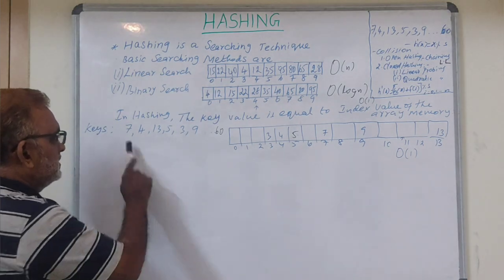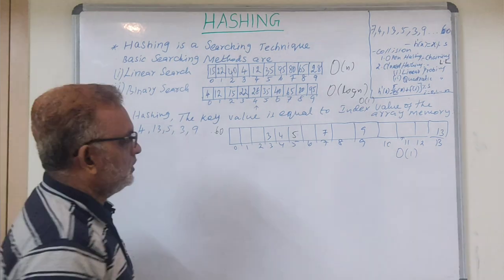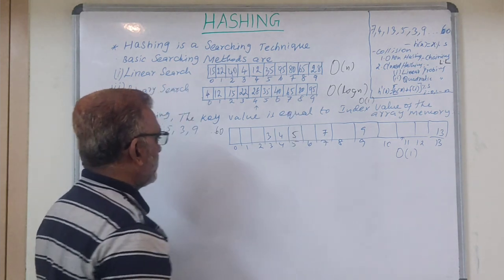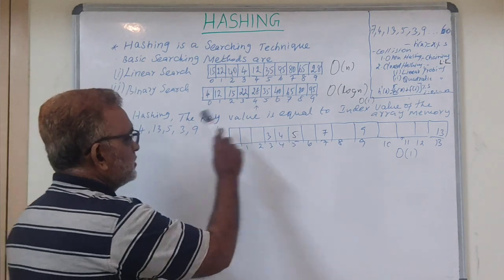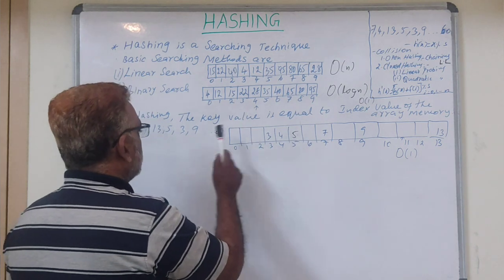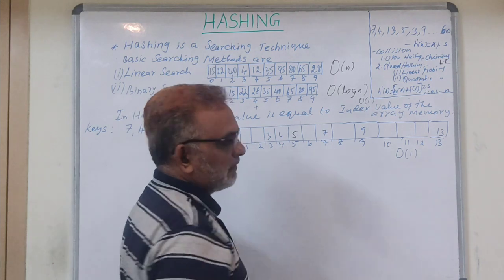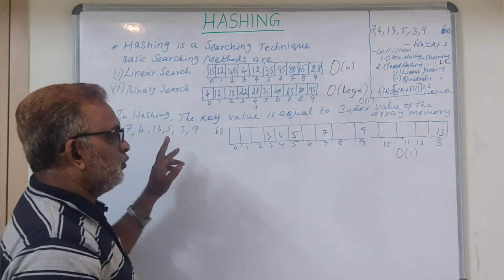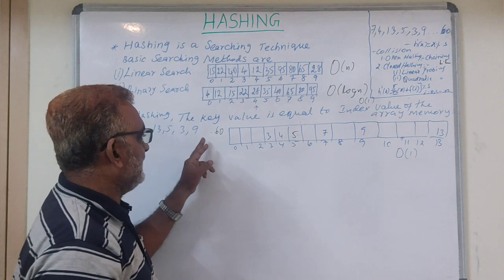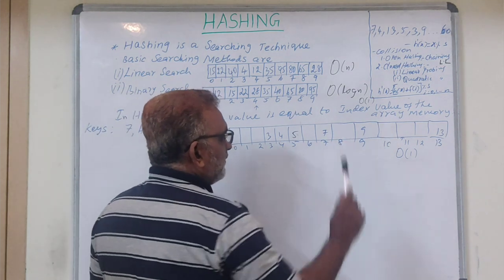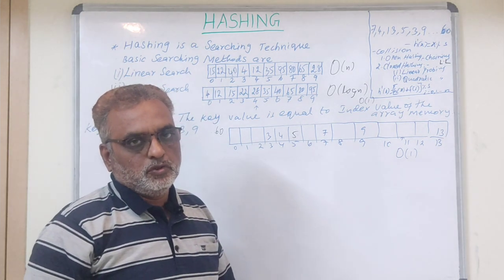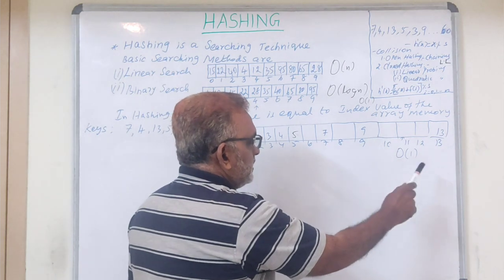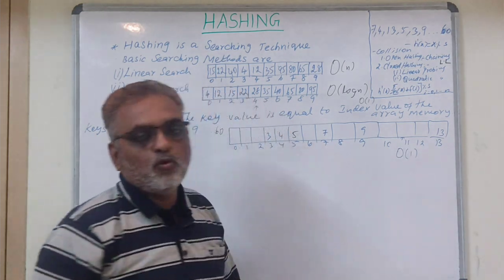Consider the list of values: 7, 4, 13, 5, 3, 9. With direct addressing, 7 is stored in the 7th location, 4 in the 4th location, 13 in the 13th location, 5 in the 5th location, 3 in the 3rd location, and 9 in the 9th location. If you want to check whether the number 10 is present, you go directly to location 10 and verify — no extra seeking needed. The time complexity is O(1).